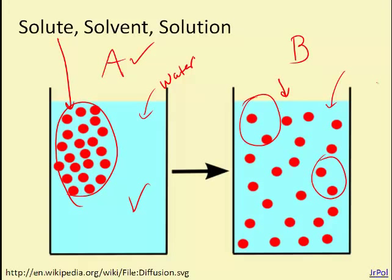But if you try to do the same with A, you'd find that this area is incredibly salty, and this area is not salty at all. So B is the homogeneous solution.